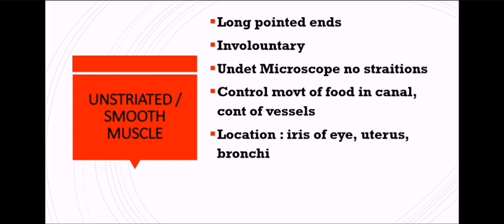Smooth muscles are present in the iris of the eye, controlling eyelid movement, moving mucus and food in the alimentary canal — all things not under your control. They are also present in the uterus and bronchi, where the exchange of gases takes place. Hence they are said to be involuntary. They are going to control the movement of food in the canal and the contraction of blood vessels.